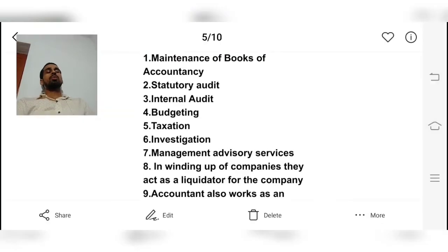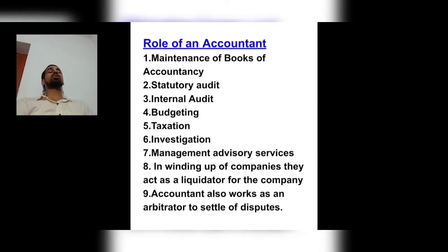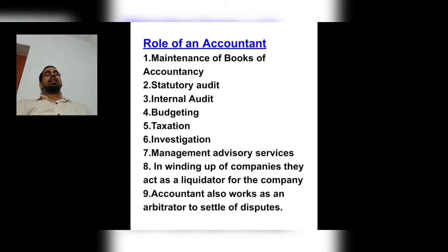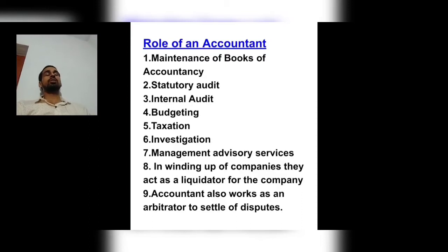So those were our internal and external users — our first topic. Now let's discuss the second topic: role of an accountant. What is the role of an accountant in accountancy, in any organization, entity, company, or firm? The first role of an accountant is to maintain books of accountancy — accountancy is kept so that we can maintain and conduct our accounting books. The second role is statutory audit.